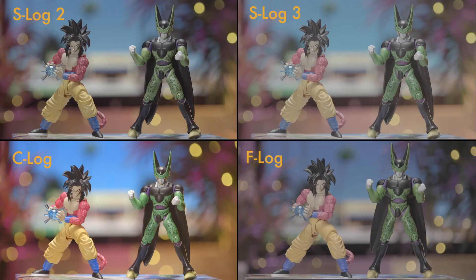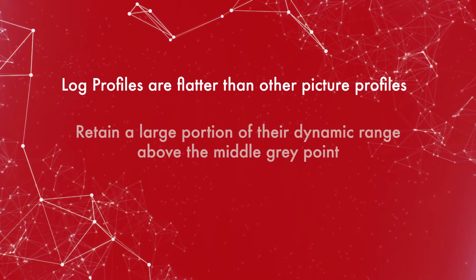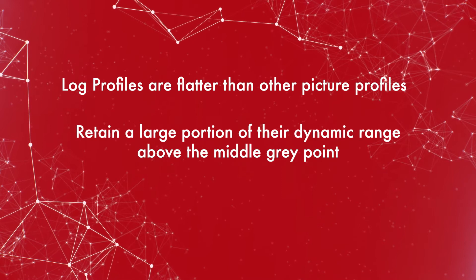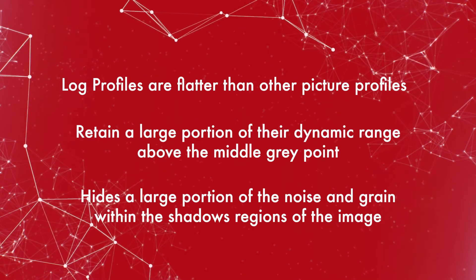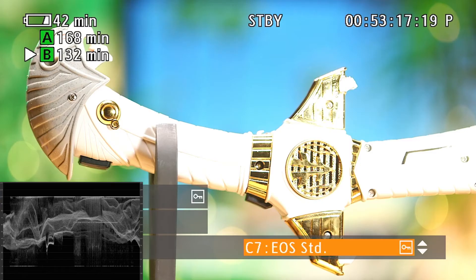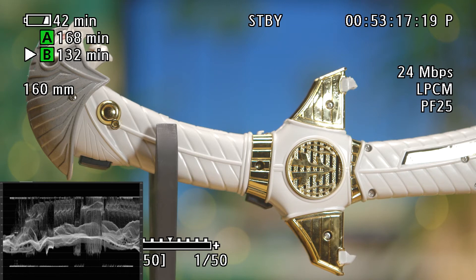All manufacturers design their Log profiles slightly differently, but they all follow a similar trend. They're generally flatter than a regular profile, retain a lot of their usable dynamic range above the middle gray exposure point, and hide the majority of their noise and grain within the lower shadow region. Because of this, Log profiles love light, and perform at their most optimal when the sensor is slightly overexposed past the manufacturer's recommended settings. Its curve in the brighter region helps provide a gradual transition between the white point, the highlights, and the eventual clipping point.